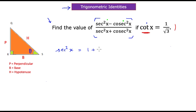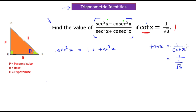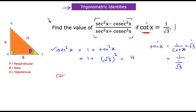Using our standard identities, sec²x = 1 + tan²x. Since tan x is the inverse of cot x, tan x = 1 / (1/√3) = √3. Substituting, tan²x = (√3)² = 3, so sec²x = 1 + 3 = 4.